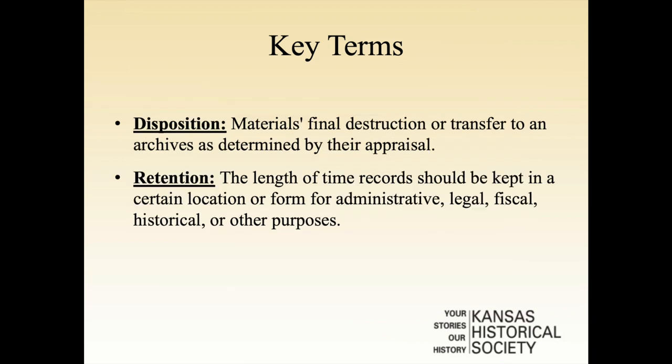Our third term is disposition, which is what you ultimately do with those records. The state of Kansas recognizes three different dispositions: permanent, which means those records are retained permanently by your office either on-site or in off-site storage; archives, which means those records are transferred to us at the state archives; and destroy. We generally advise agencies that if there is any chance your records contain personally identifiable information, classified information, or restricted information, you destroy those records either by burning or by shredding. Otherwise, you are free to destroy them simply by recycling.